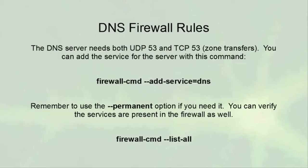To make DNS available through the firewall, the DNS server needs both UDP and TCP port 53. TCP 53 is necessary for zone transfers. You can add the DNS service with: firewall-cmd --add-service=dns. If you want it to be permanent, add the --permanent option, which puts it into the configuration file so the rule persists on restart. Verify services are present in the firewall with firewall-cmd --list-all.